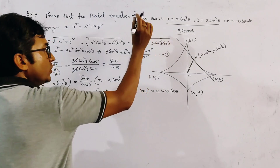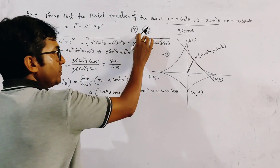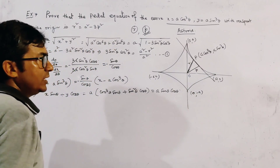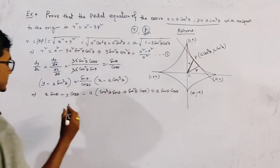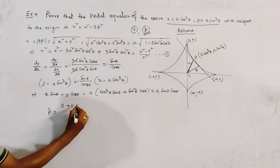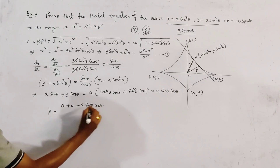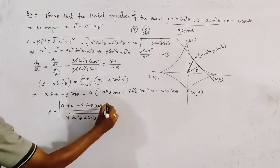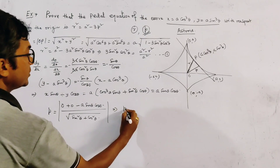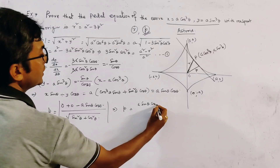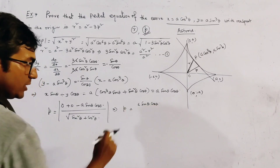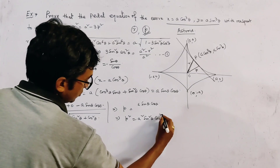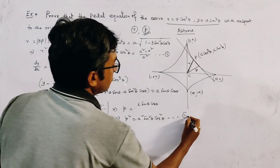Now we have to find the value of P, which is the perpendicular distance from the origin to the tangent. Using the tangent equation x·sinθ + y·cosθ = a·sinθ·cosθ, the perpendicular distance from the origin (0, 0) is P = |a·sinθ·cosθ| / √(sin²θ + cos²θ) = a·sinθ·cosθ. Squaring, we get P² = a²·sin²θ·cos²θ. We name this as relation number 2.